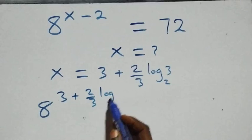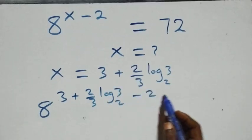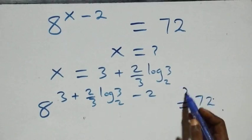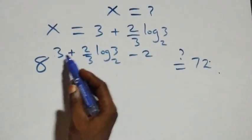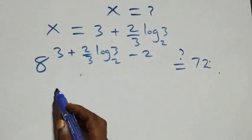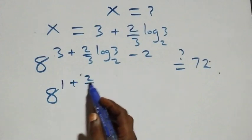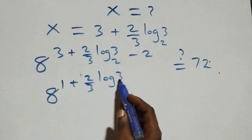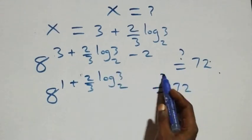So the value of x in this problem is x equals 3 plus 2 over 3 log base 2 of 3, then minus 2, which equals 72. Bringing 3 minus 2 together gives 1, so we have 8 raised to power 1 plus 2 over 3 log base 2 of 3 equals 72.